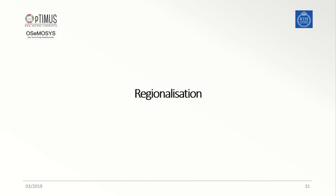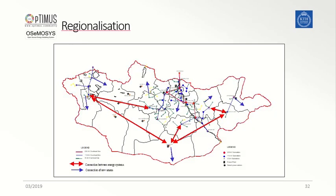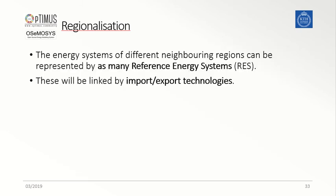One last topic to consider: what about representing different regions in one single model? It might be the case that in one single country there are electricity infrastructures deployed in small sub-regions in different areas, connected with high voltage interconnectors. It is good practice, then, to represent each of these regions as a system in itself that is connected to the other regions through importing or exporting technologies.